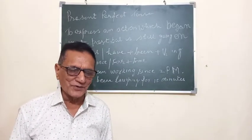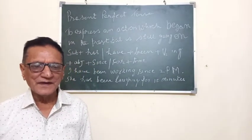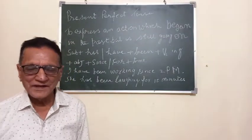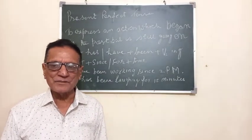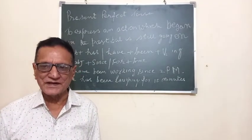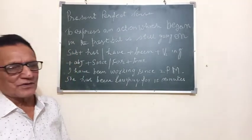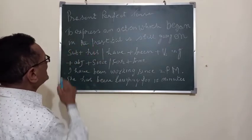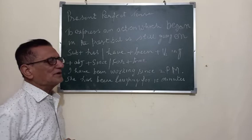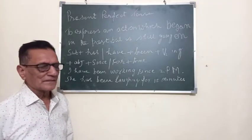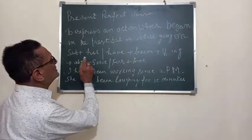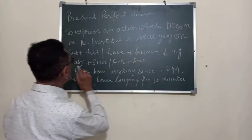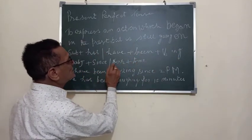Hello students, how are you? You must be fine and enjoying the time at home. Today I am telling you about the present perfect continuous tense. The present perfect continuous tells us about an action which began in the past and is still going on at the present time. The formula is: subject + has/have + been + verb-ing + object + since/for + time.